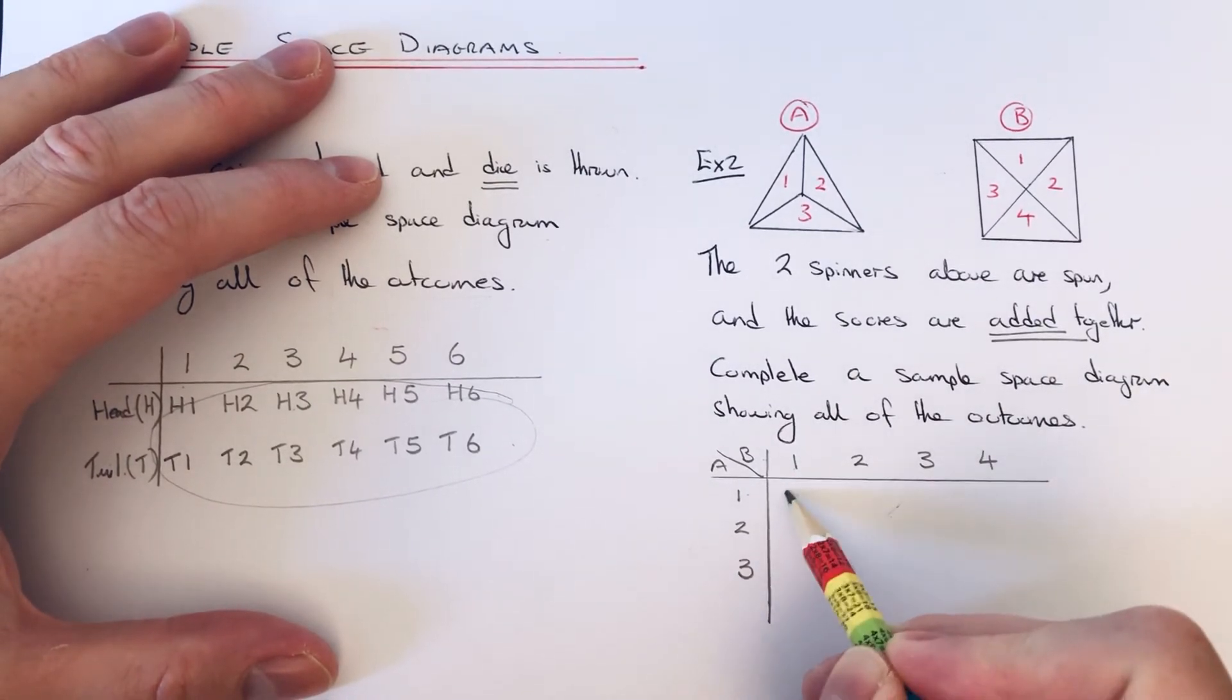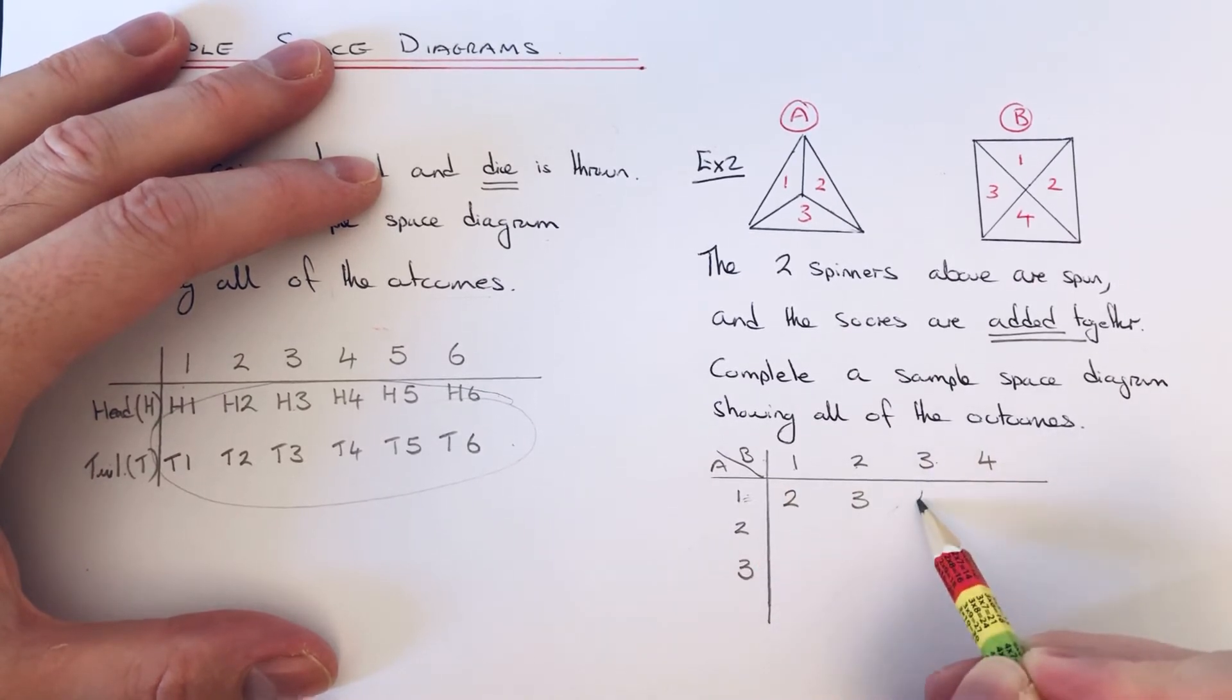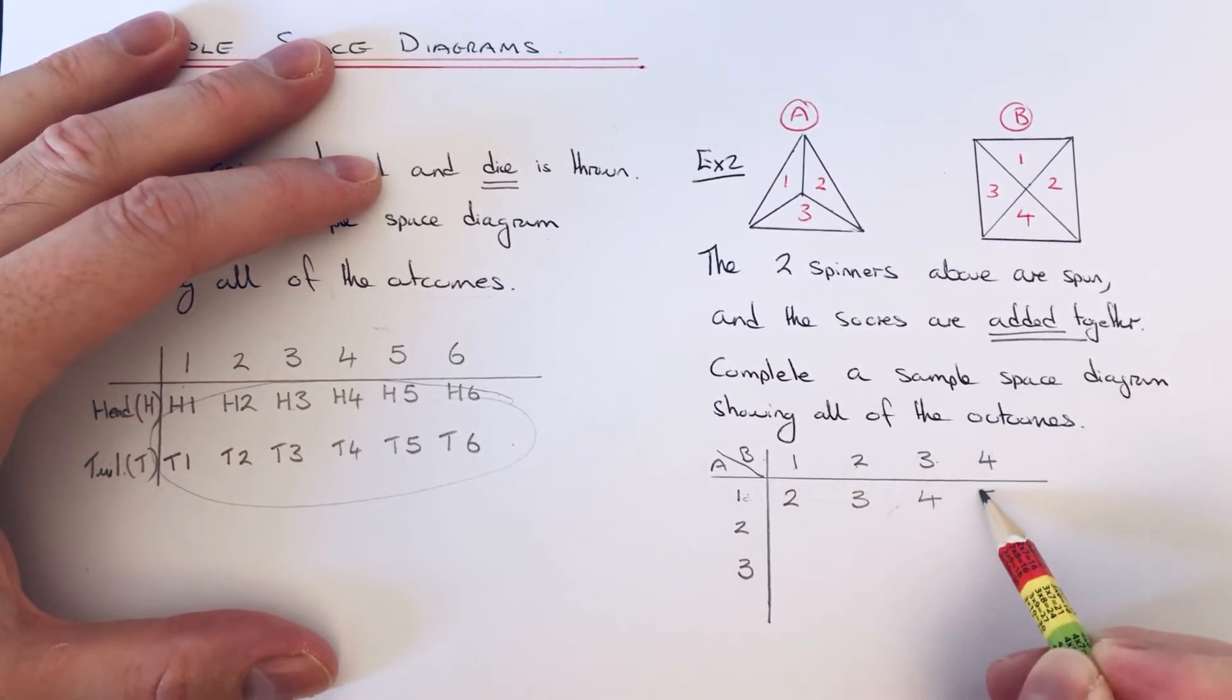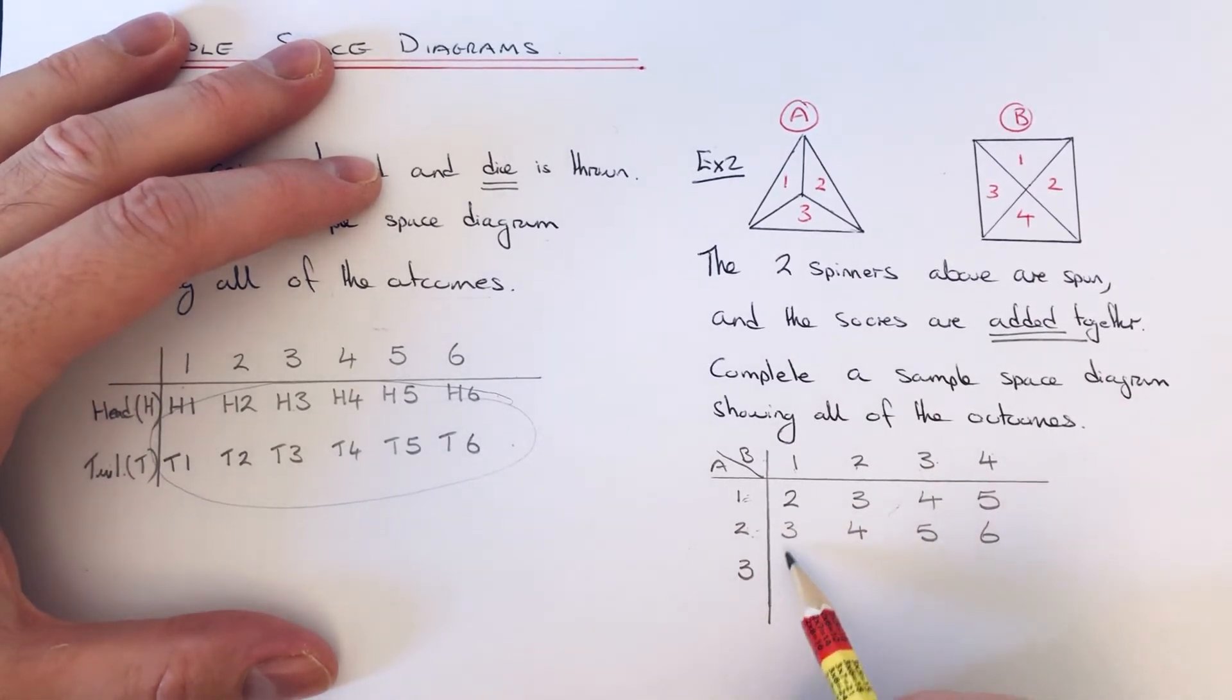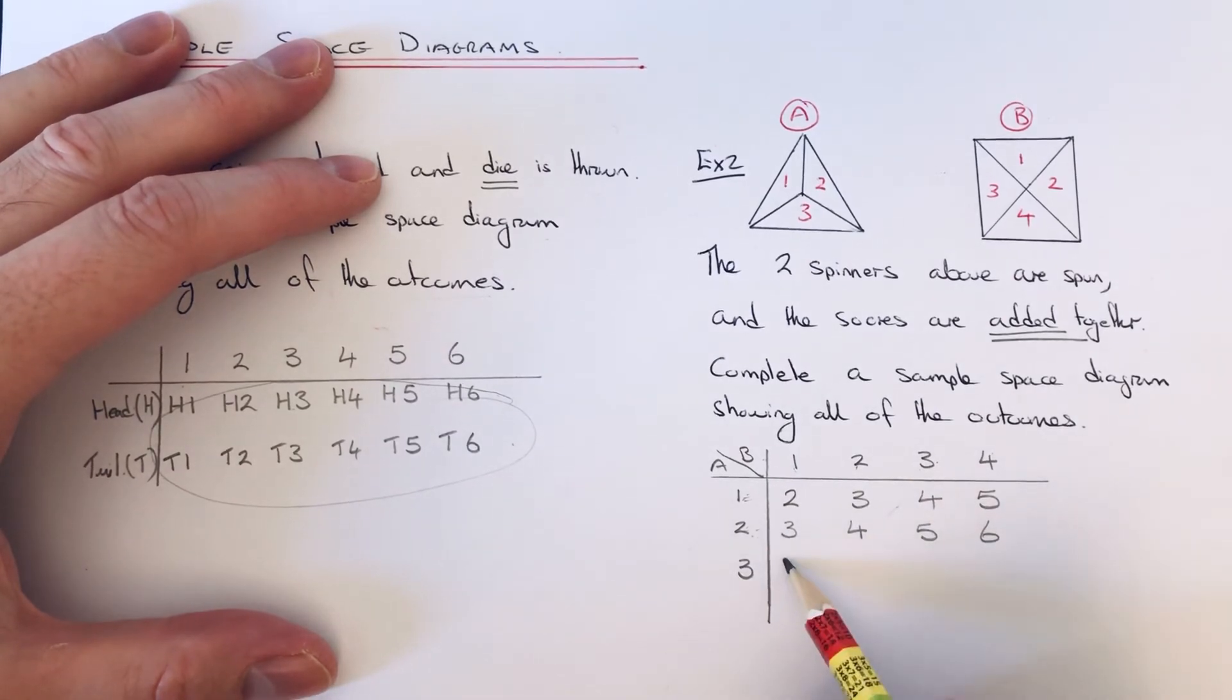So 2 add 1 is 3, 2 add 2 is 4, 2 add 3 is 5, 2 add 4 is 6. Final row: 3 add 1 is 4, 3 add 2 is 5, 3 add 3 is 6, 3 add 4 is 7.